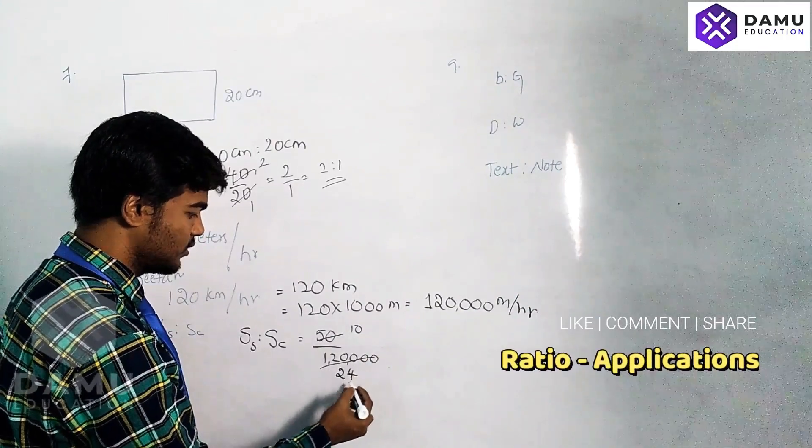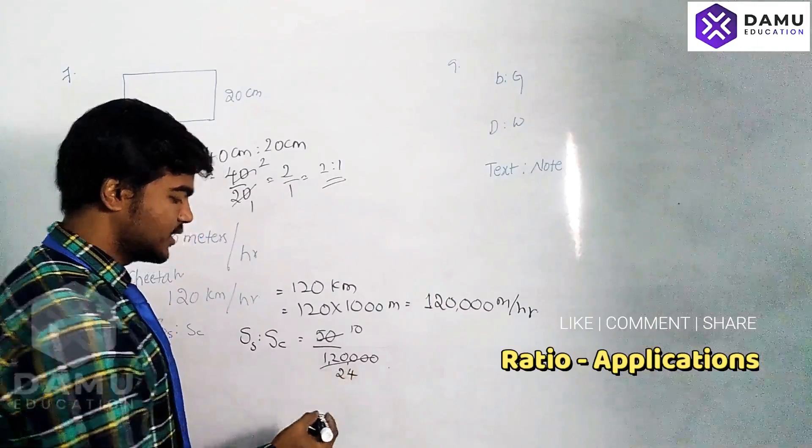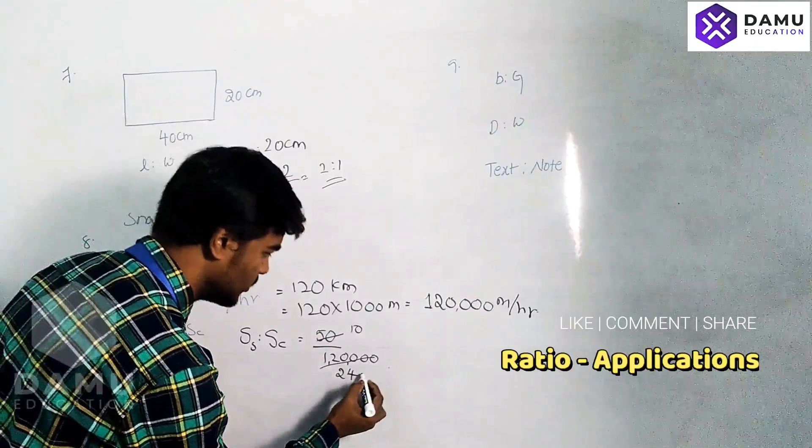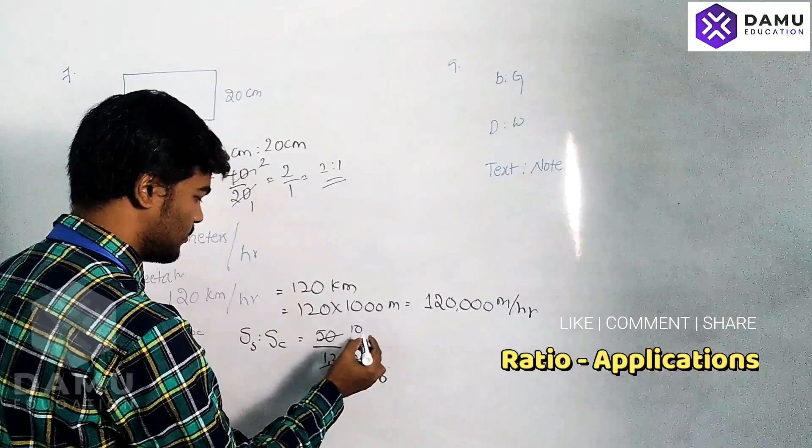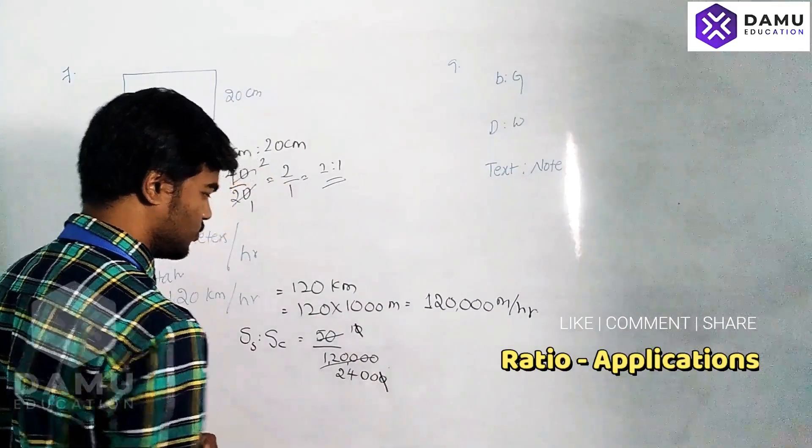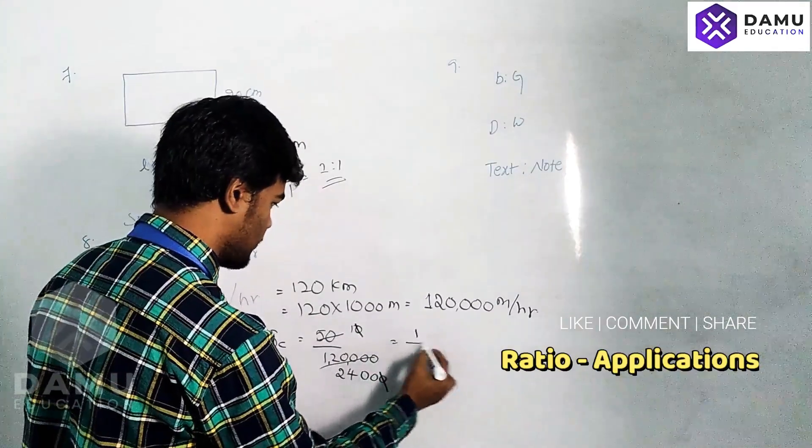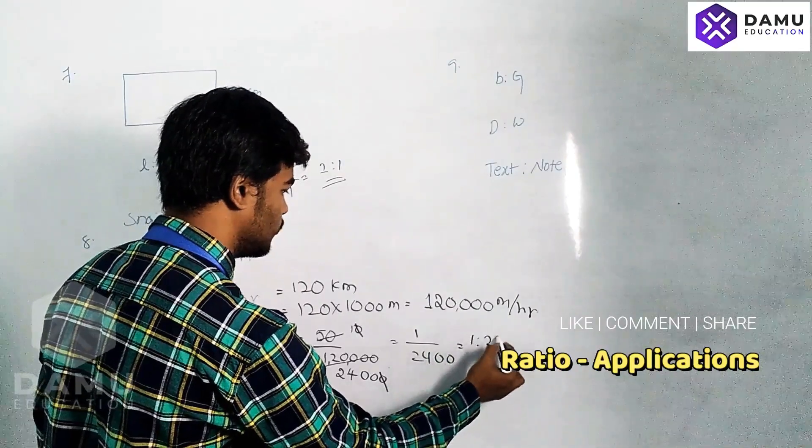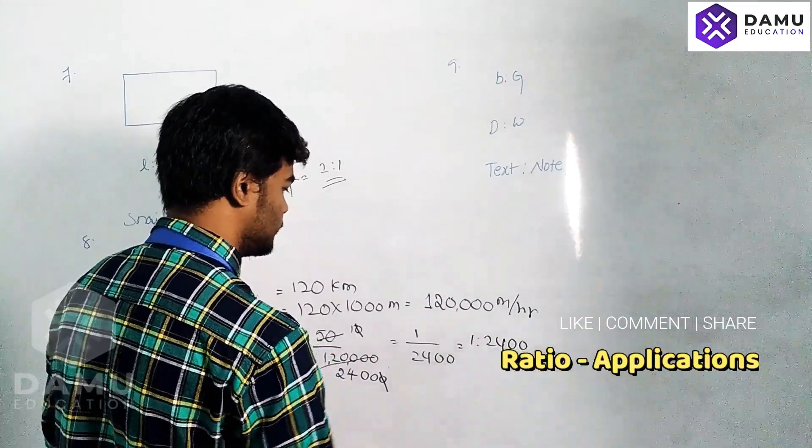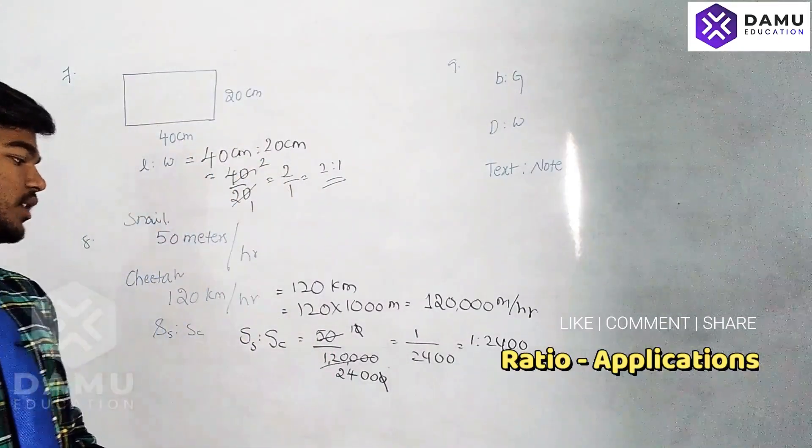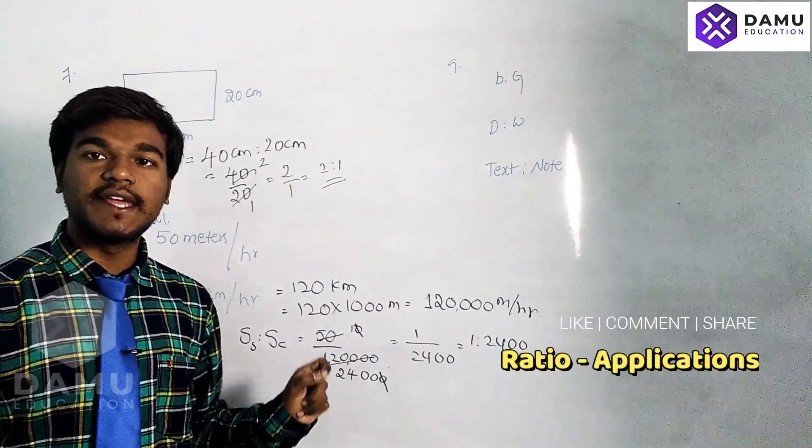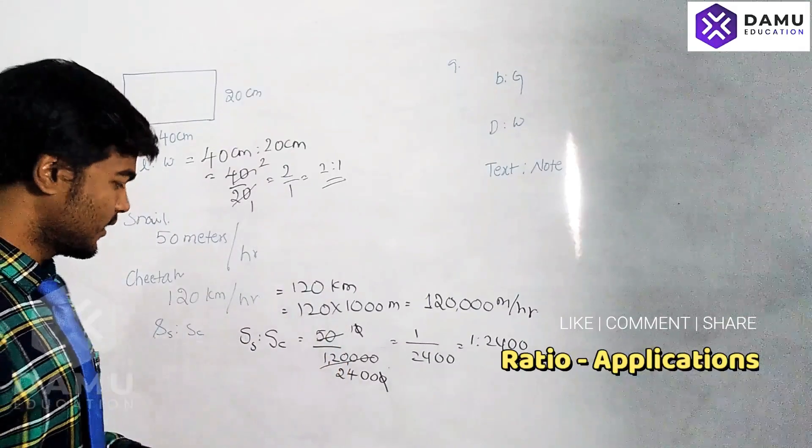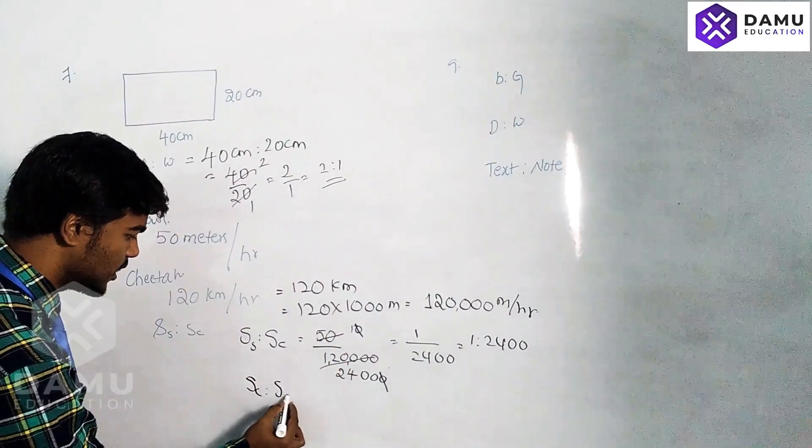Dividing by 5, that will be 1 by 2,400. So the ratio of the speeds which we took, snail to cheetah, is 1 is to 2,400.